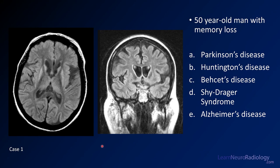Case number one is a 50-year-old man with memory loss. We've got two images here — an axial FLAIR and a coronal FLAIR. Your choices are Parkinson's disease, Huntington's disease, Behcet's disease, Schilder's syndrome, and Alzheimer's disease. I'll give you a few more seconds just to think about that.